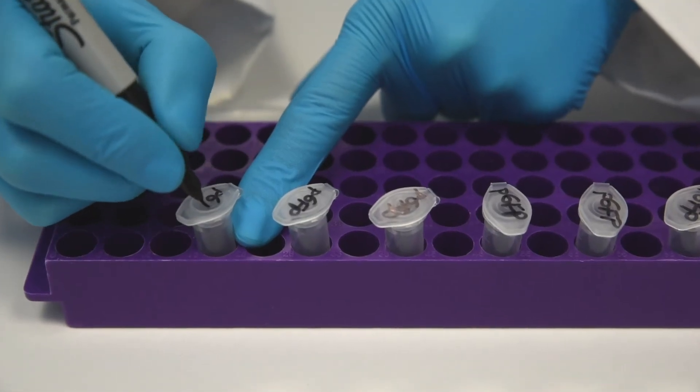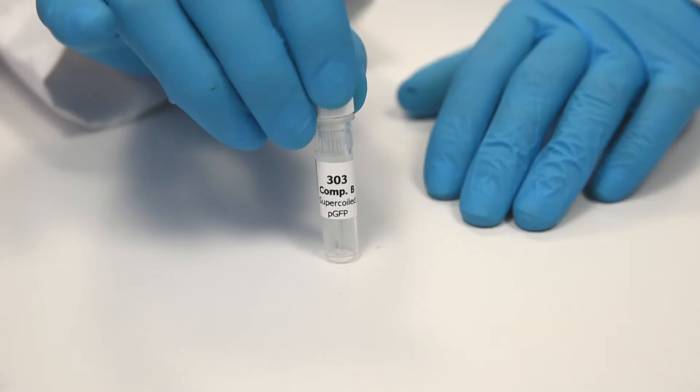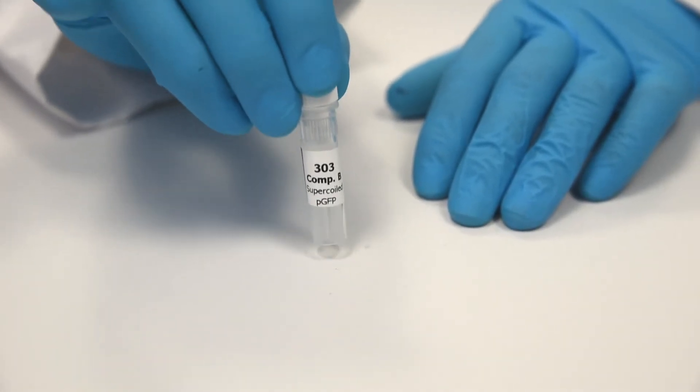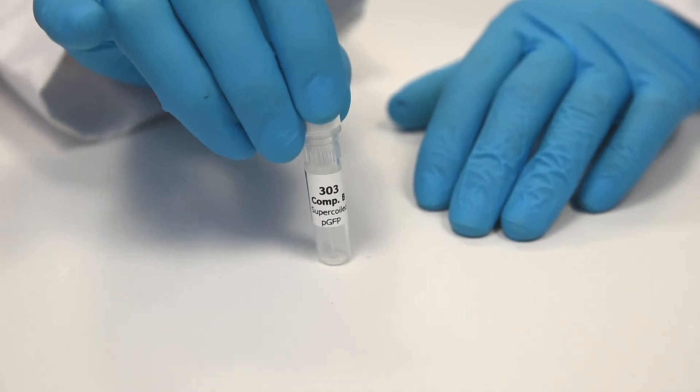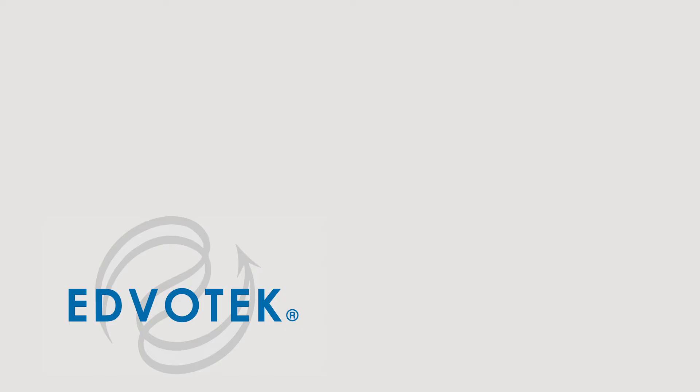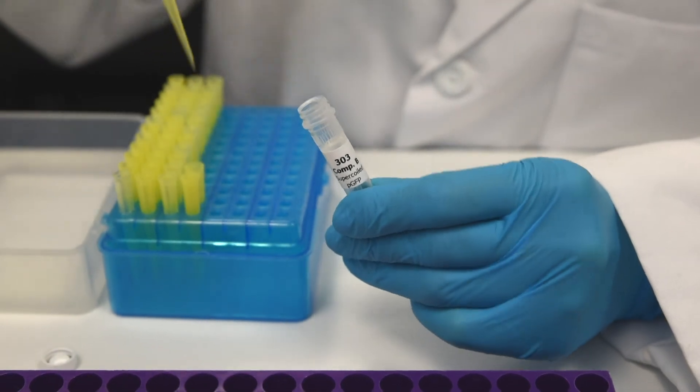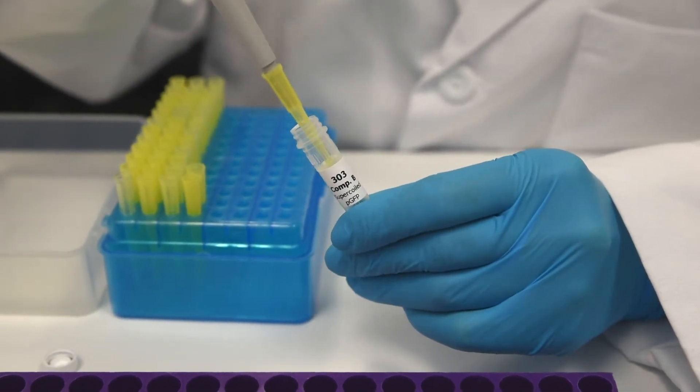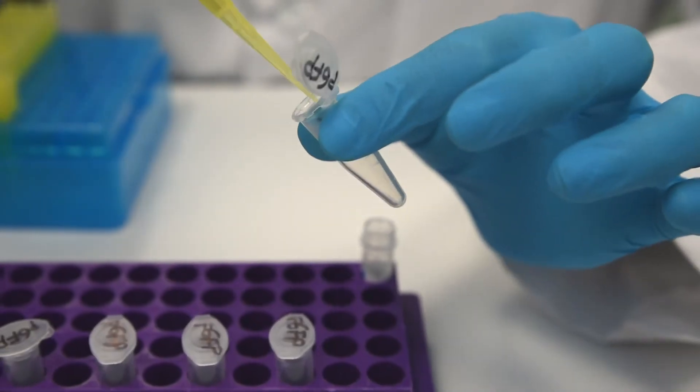Step 6: Label 10 microcentrifuge tubes pGFP. Step 7: Before dispensing, tap the tube of pFluoroGreen until all the sample is at the tapered bottom of the tube.